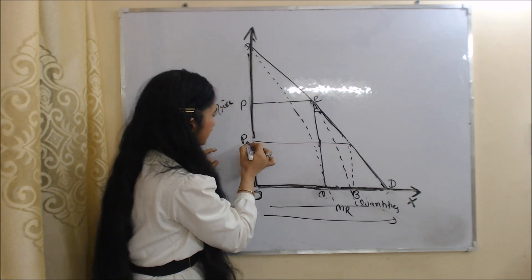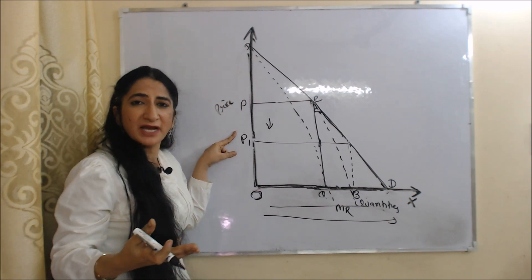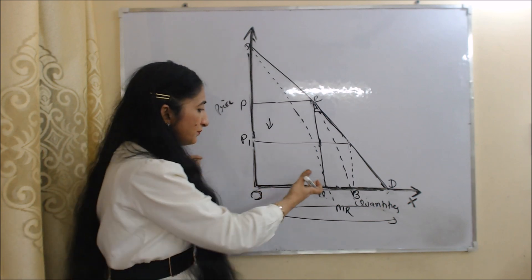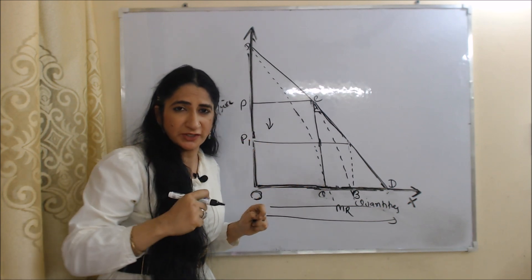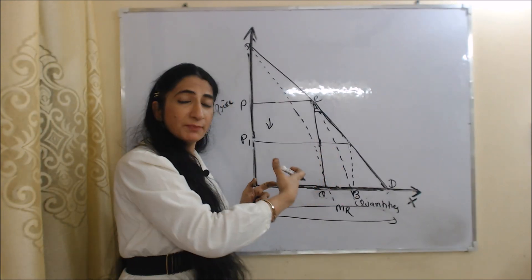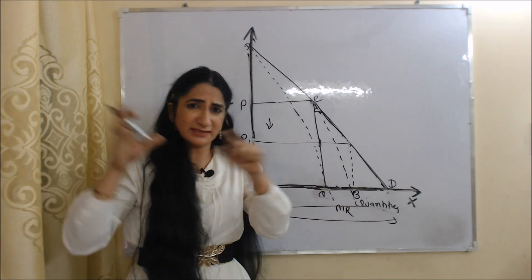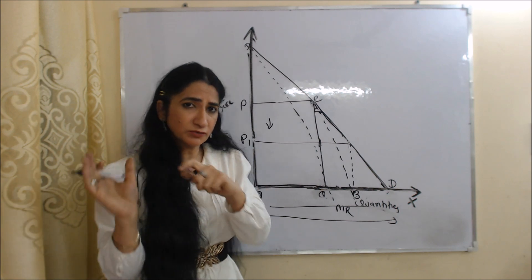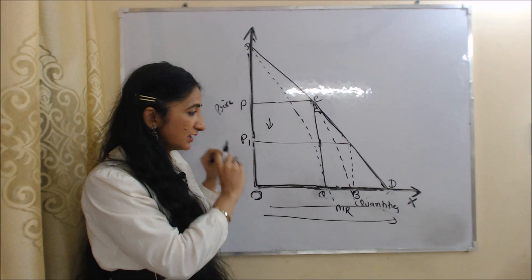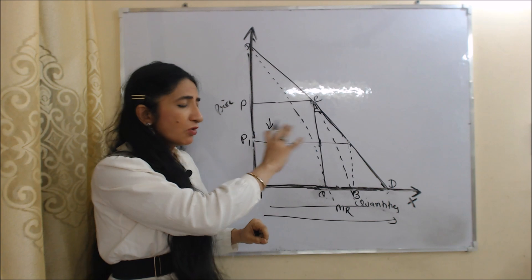As B enters the market, price falls from OP to OP1. As price falls, profit obviously falls. So in order to increase profit, A will reduce production. As A reduces production, profit again increases, and seeing that, B increases production. As discussed in the example, A will continue to reduce production but B will continue to increase production, and this process will continue until their production becomes equal to each other.